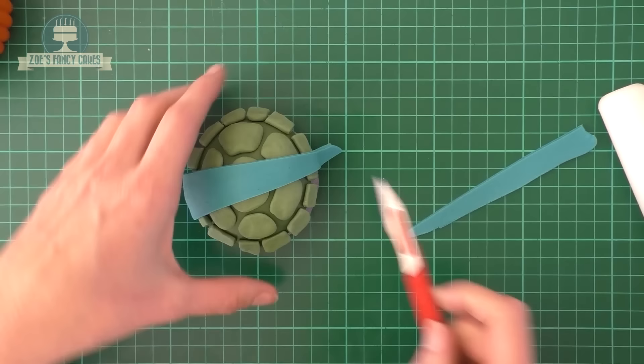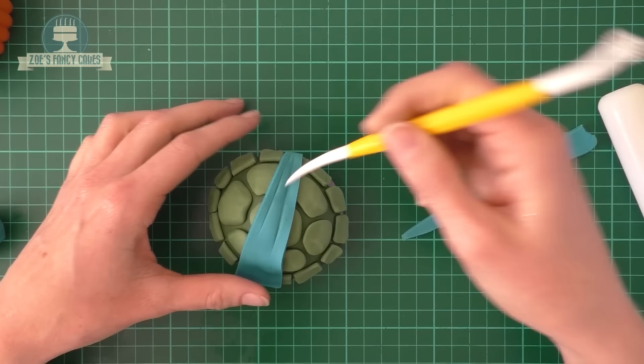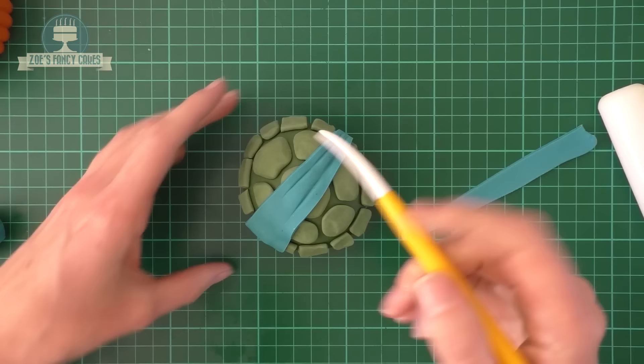Then I'm going to add some crease lines just using a modeling tool. You can use the back of a knife or a cocktail stick to add the lines if you prefer. You can go from both sides for that. Put as many lines in as you like or as few as you like.